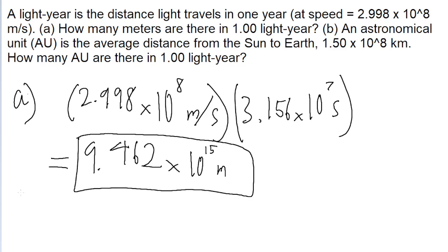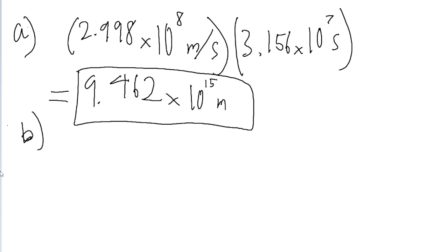So that's the answer to part A. And part B asks for how many astronomical units there are in one light year. And this just comes down to a fairly simple unit conversion problem, because we're already given the distance of one light year in meters, 9.462 times 10 to the power of 15 meters.